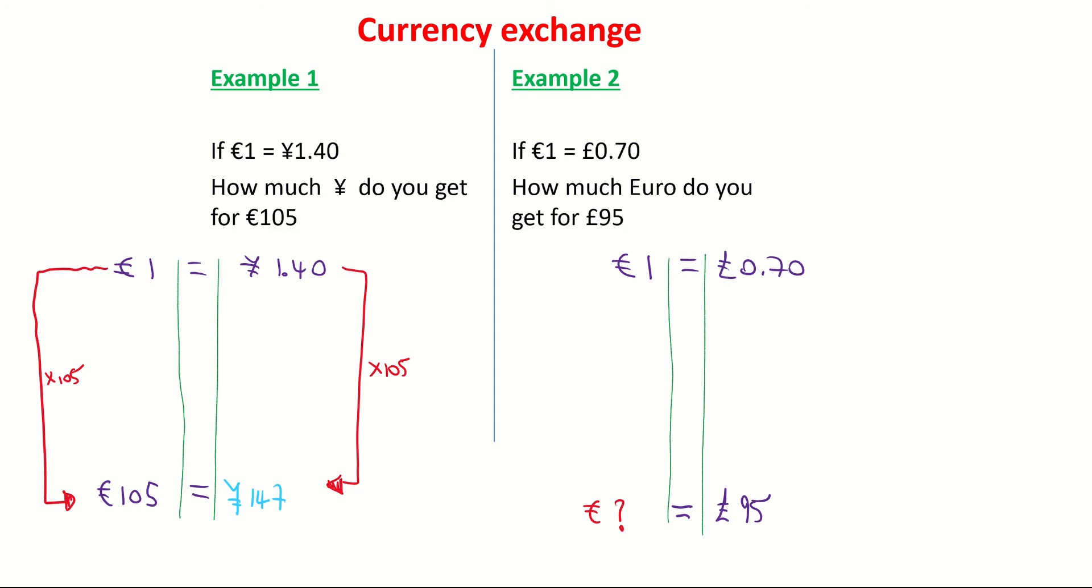You can see though, it's a little bit different this time. I'm not going to just multiply by 95 because I'm not multiplying 1 by 95. I've been multiplying 0.70 by 95. So it's a little bit different.